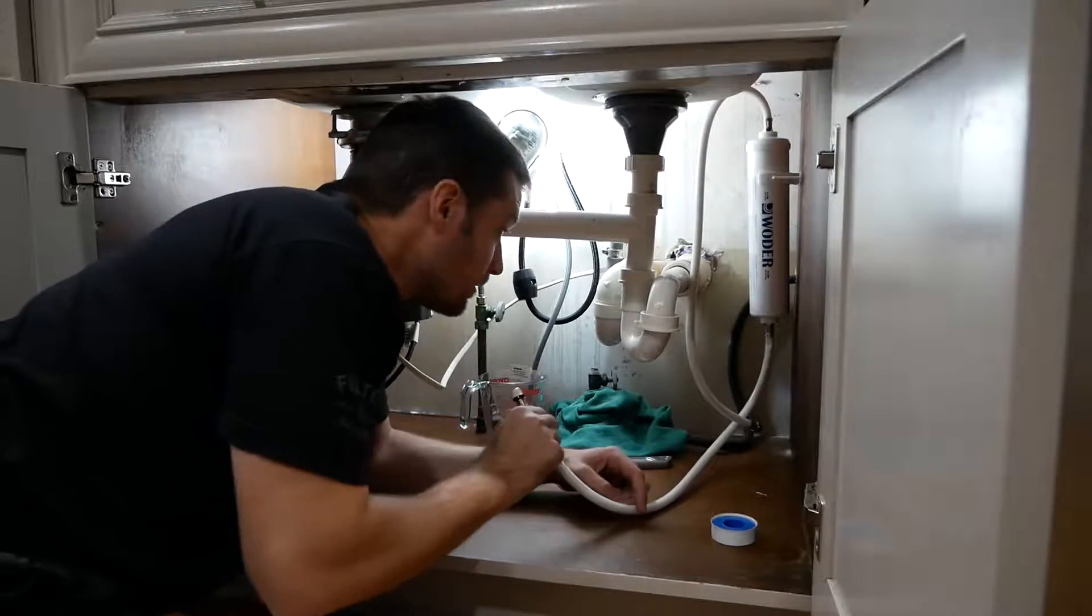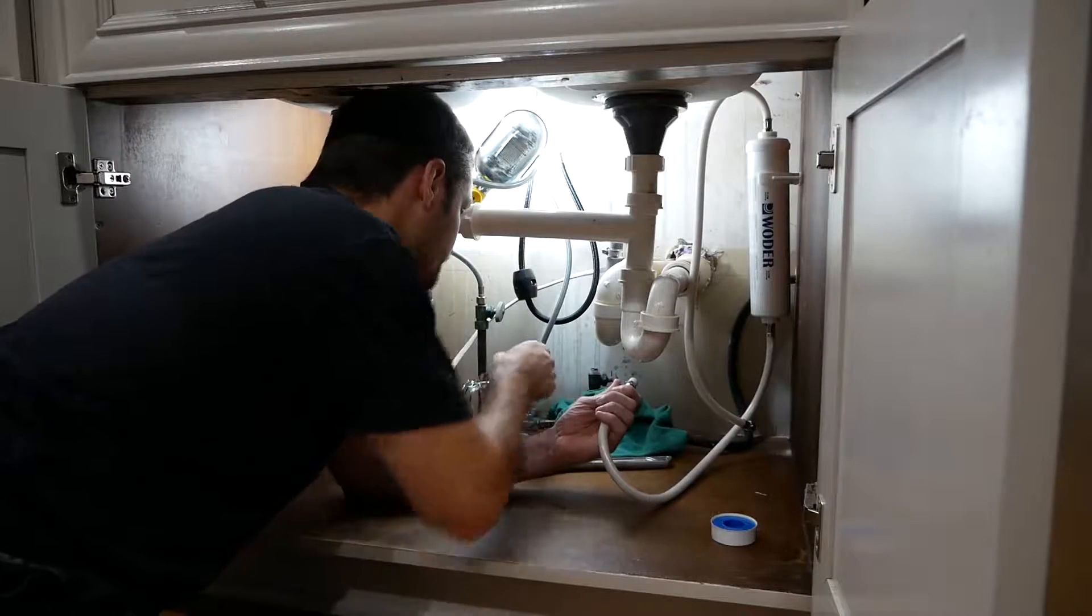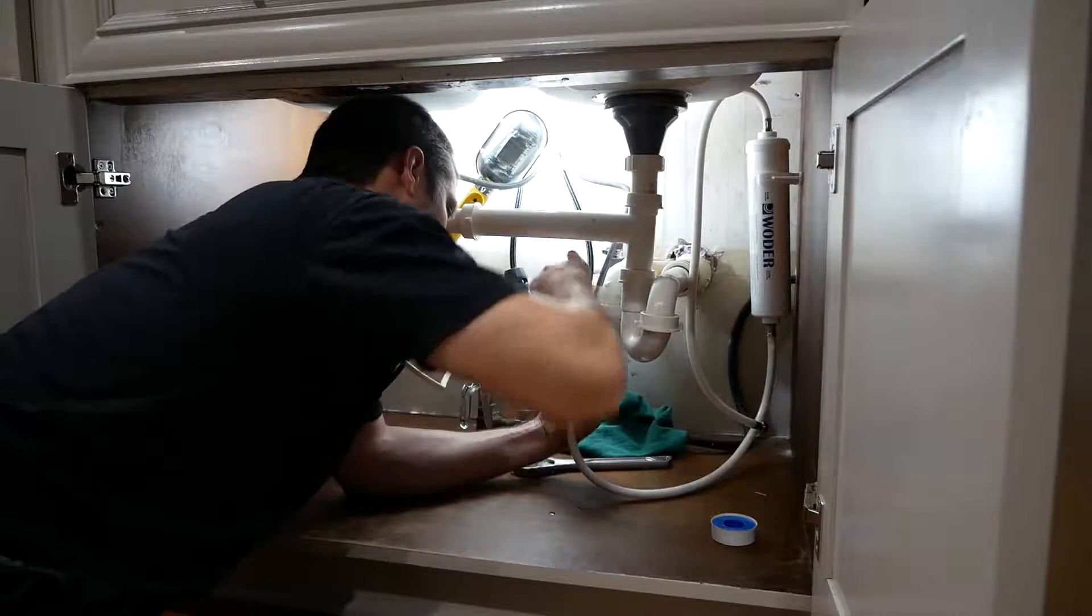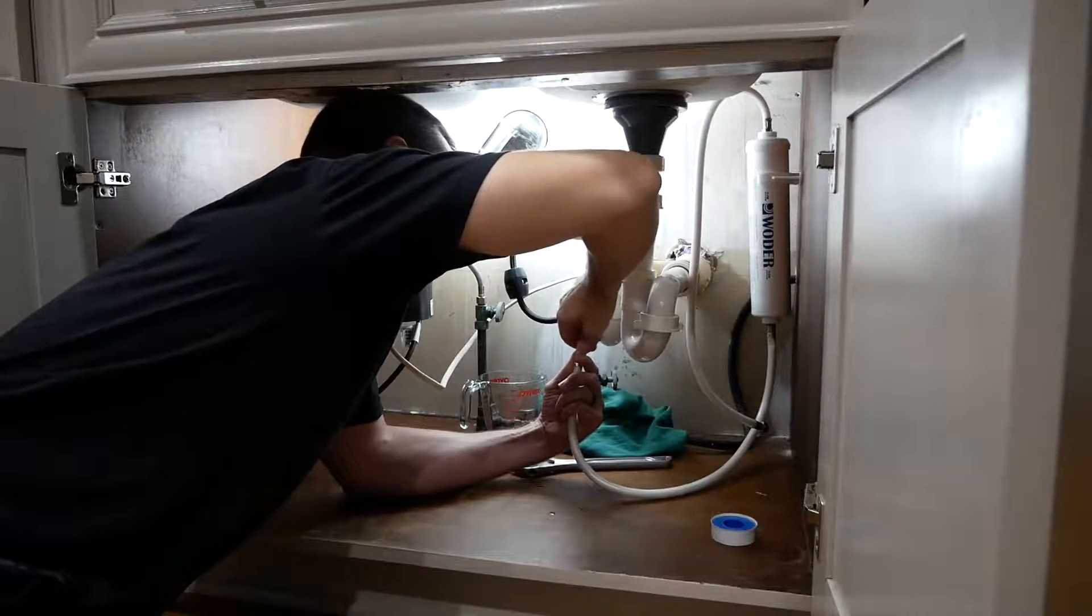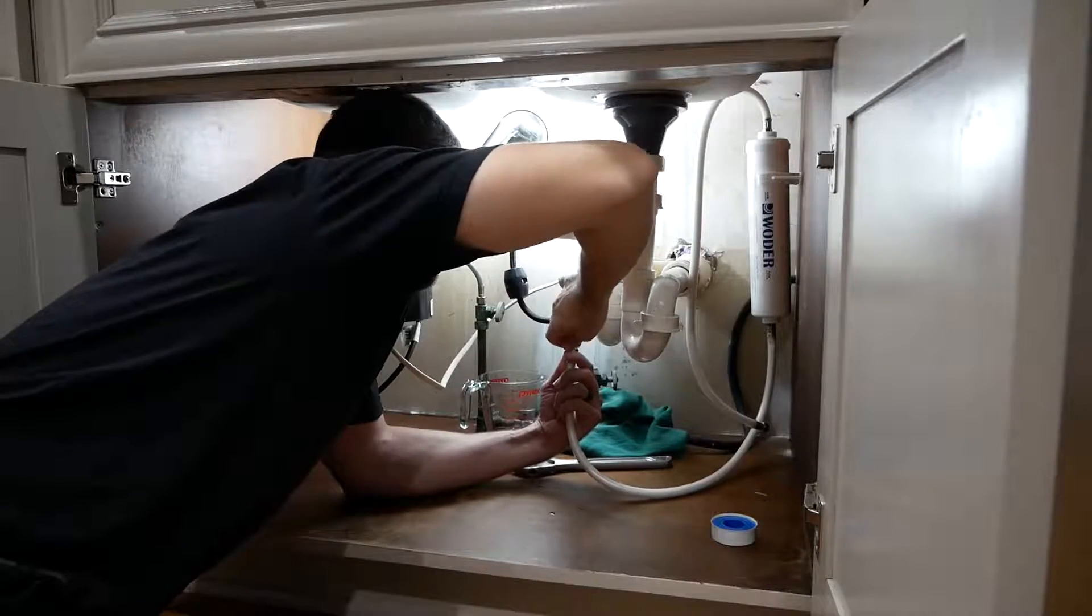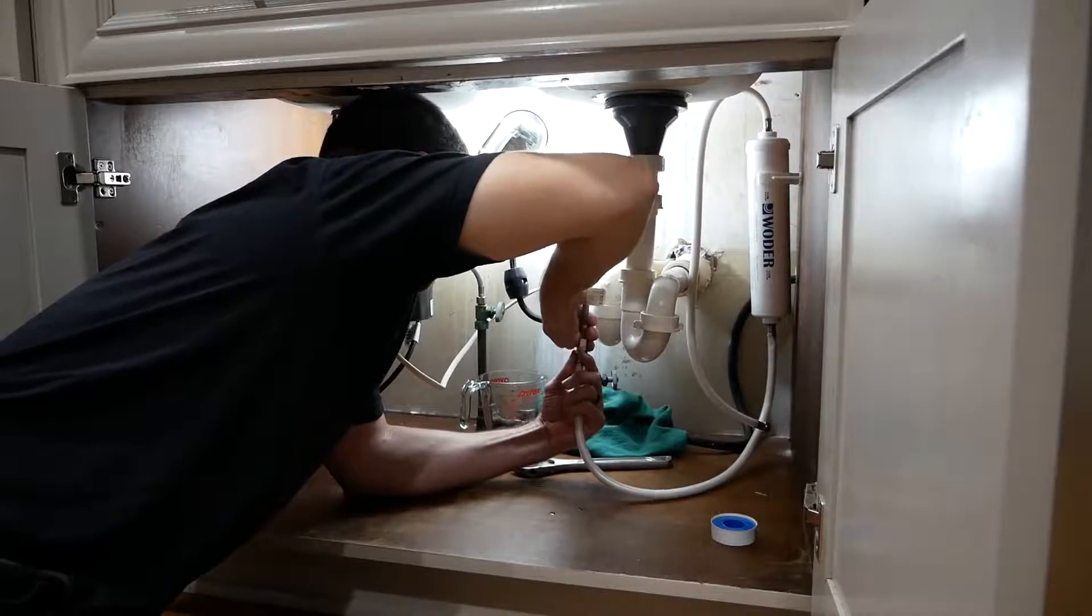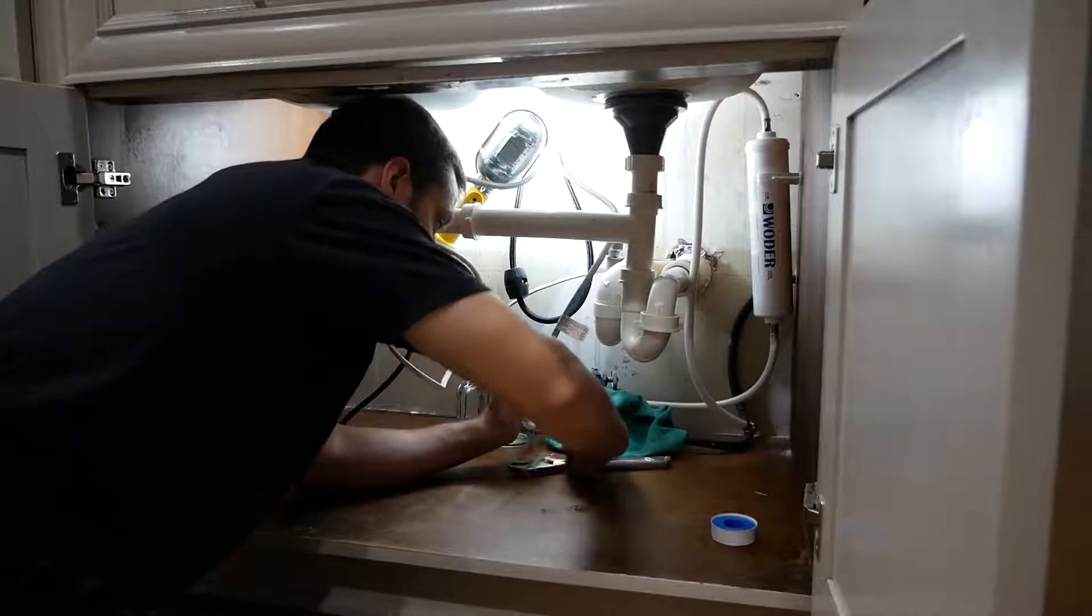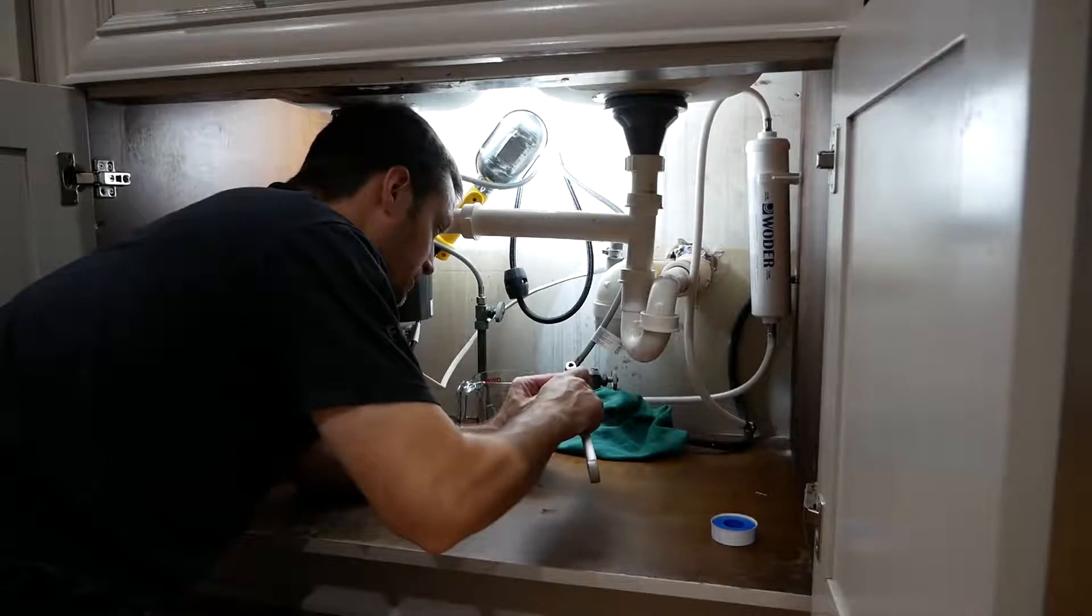Okay. So this is our input line. This is going to be connecting up with our input here. So we'll just screw this on. You can probably tuck this behind here. And then we'll just want to secure it with the wrench to make sure we got it good and tight.